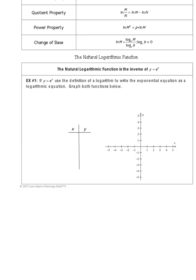Let's go ahead and graph to see that the natural log really is not that much different than a regular log. Since y equals e to the x is the inverse of our natural log, we'll start by graphing y equals e to the x. Setting up an xy table: when x equals 0, e to the 0 power is 1; when x equals 1, e to the first power is about 2.7; and when x equals 2, e to the second power gives about 7.4. So I'm going to plot those points.